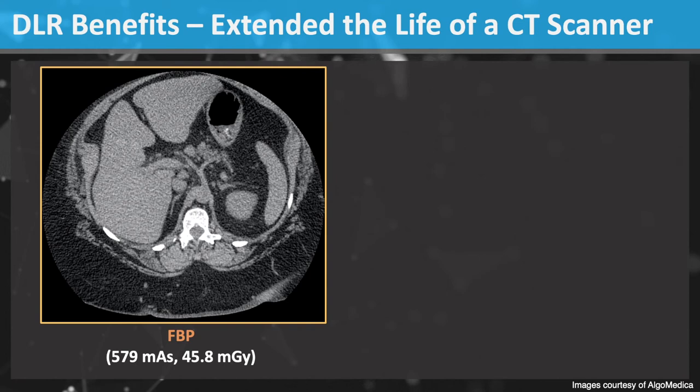This obese patient underwent CT imaging on an older CT scanner, and the tube current was maxed out at 579 mAs. The images have high noise and low quality. A good technologist will try a number of techniques to get around this, but in many patients it's just not possible with older scanners.